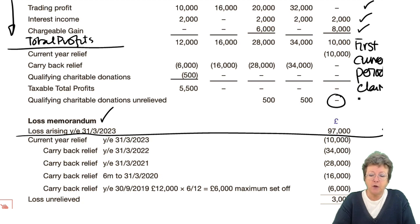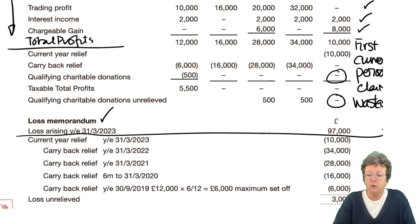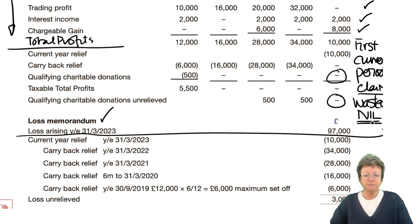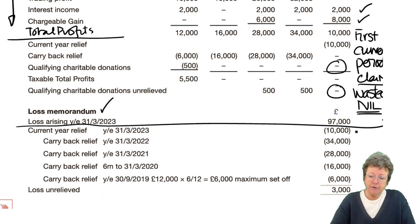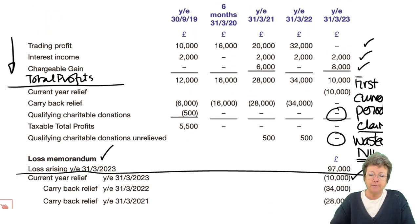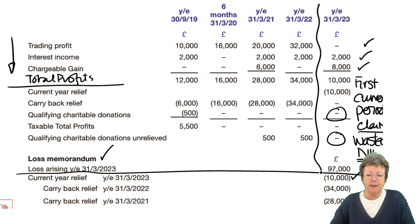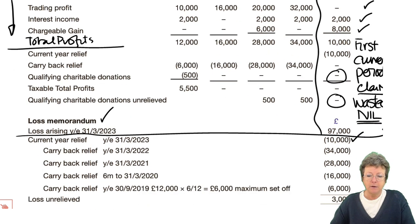These are QCDs. You can write in the word 'wasted' or 'nil', whichever you want. Having done that, we then deduct that and add it into our current year. We are then going to do a carry-back — last in, first out.